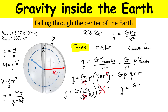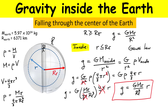This is our expression for little g everywhere inside this planet. Does it work if I'm on the surface of the Earth? If you substitute little r equal to the radius of the Earth, you can see we get the same expression as we previously had. So yes, this expression also holds at the surface.